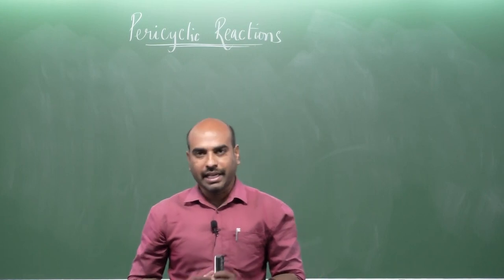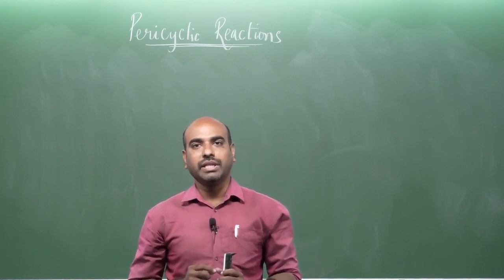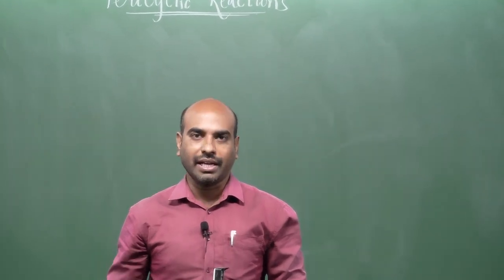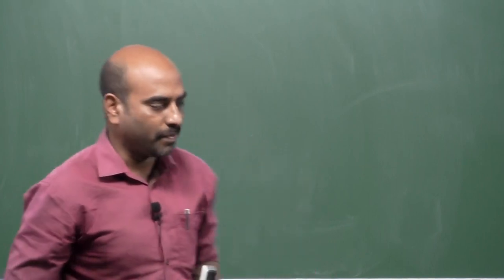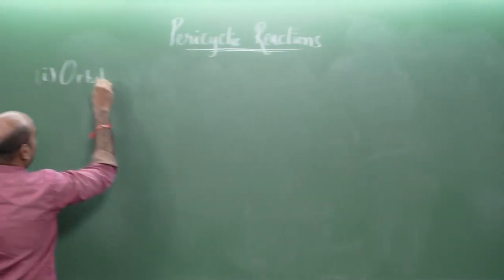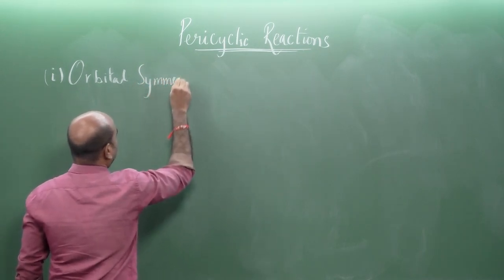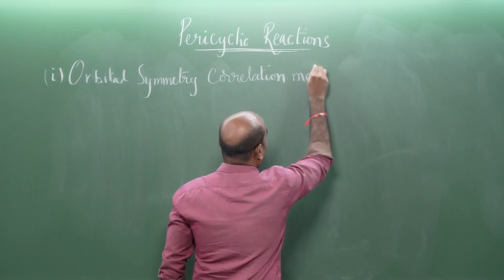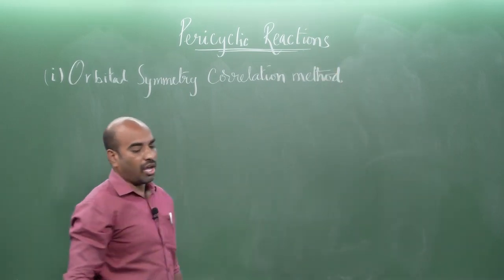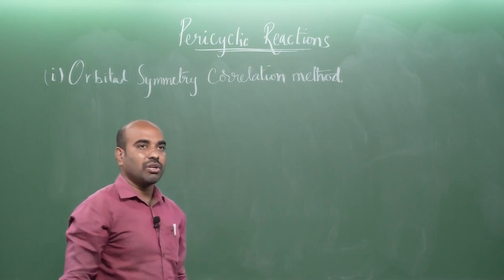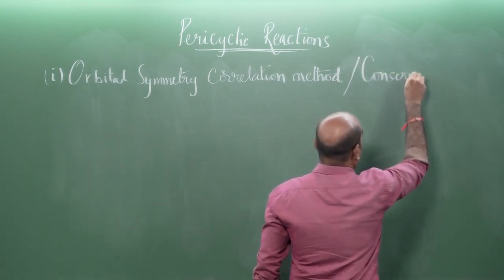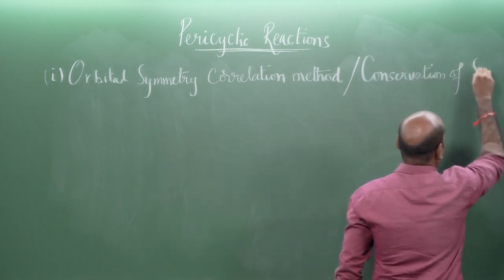After understanding the different types of pericyclic reactions, it is time to know about the analysis methods. There are three methods: the first is the orbital symmetry correlation method, also called the conservation of symmetry of orbitals method.